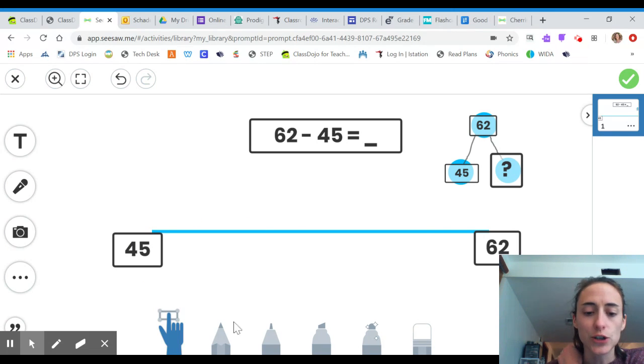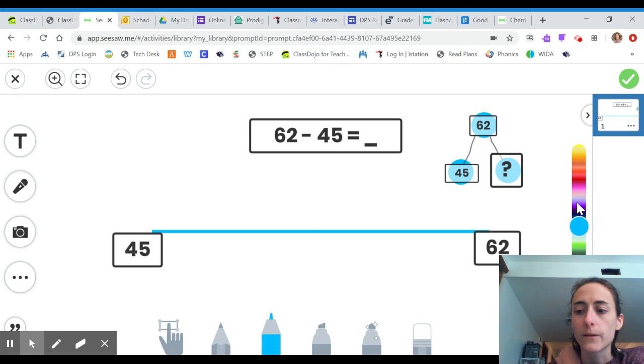So when I jump on my number line, I can draw my jumps with whatever color marker I want. And I'm planning how can I jump in the most efficient way? What would make the most sense? I know 45 is almost a friendly number. It's almost our friendly 10 of 50.